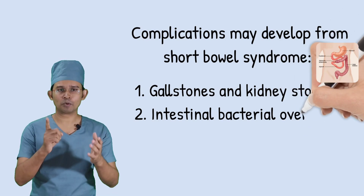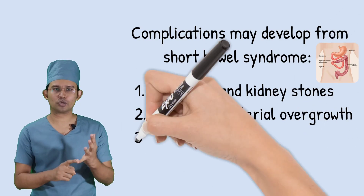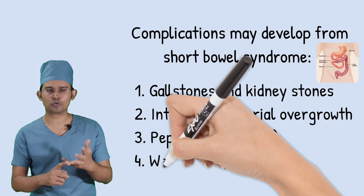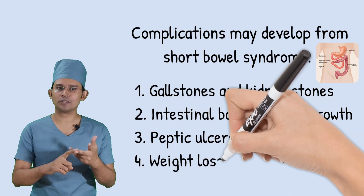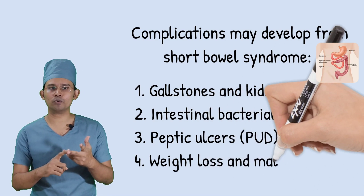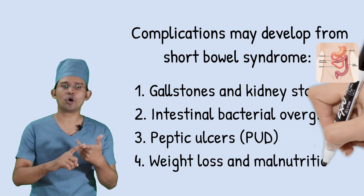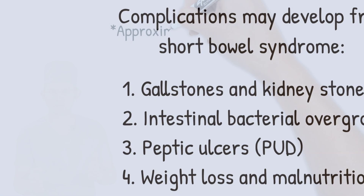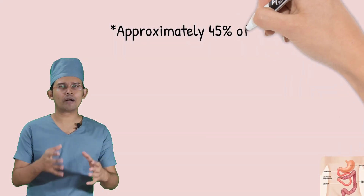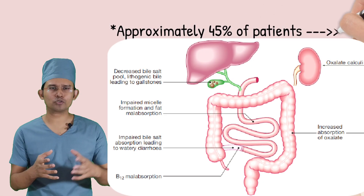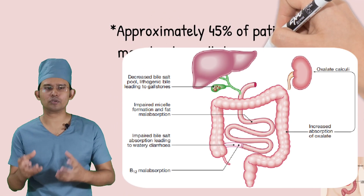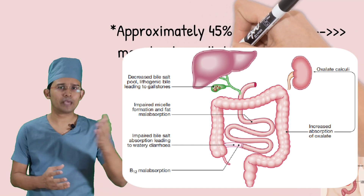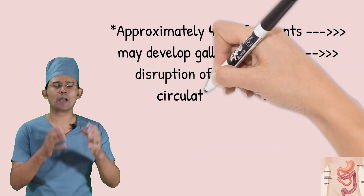Complications of Short Bowel Syndrome include gallstones, kidney stones, intestinal bacterial overgrowth, peptic ulcer disease, and weight loss and malnutrition. Regarding gallstones and kidney stones, approximately 45% of patients may develop gallstones due to disruption of the enterohepatic circulation of bile acids, which leads to gallstone formation.